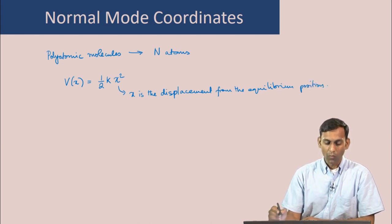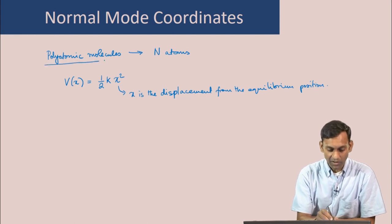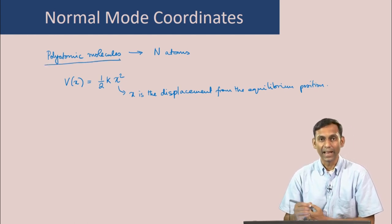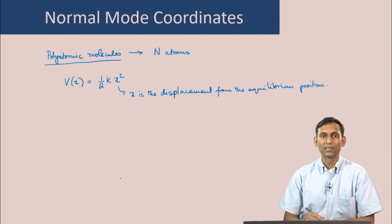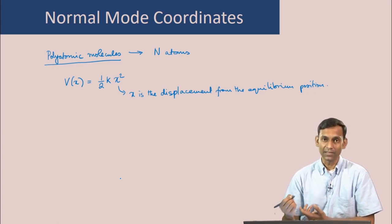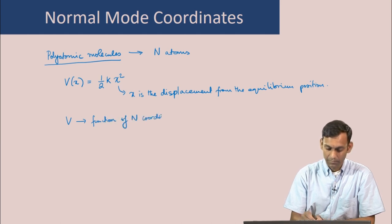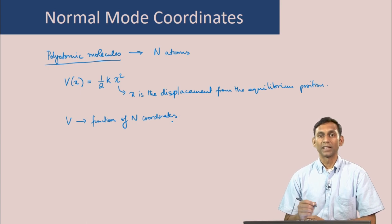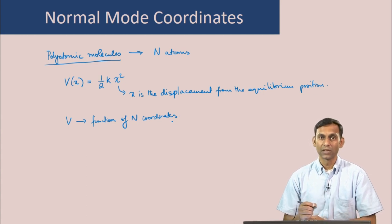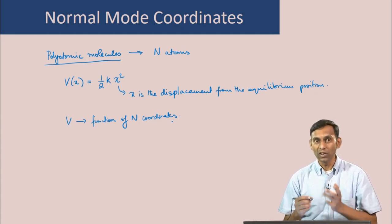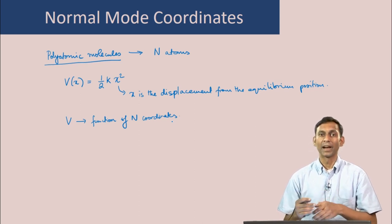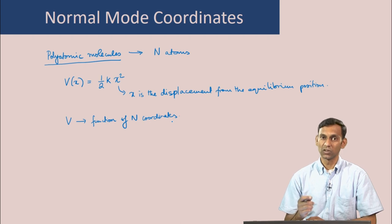Let us now see what happens in the case of polyatomic molecules when there are n atoms. In this case, the potential energy in general depends on the position of all n atoms — in other words, the potential energy V is a function of n coordinates. Recall that for a diatomic molecule, the motion of the 2 atoms can be decomposed into an overall translation of the molecule and additionally the vibrational motion of a reduced mass.